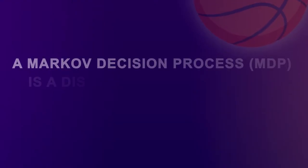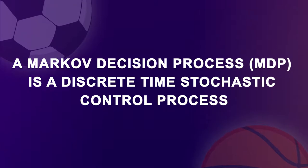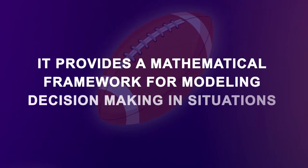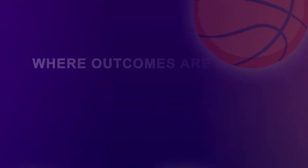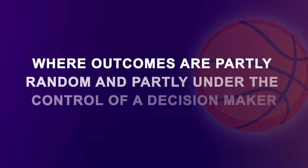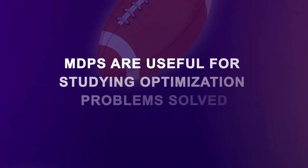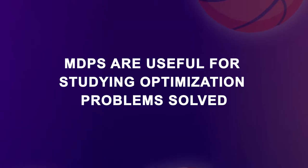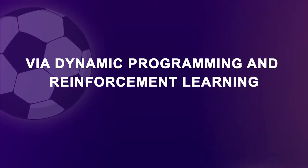A Markov decision process is a discrete-time stochastic control process. It provides a mathematical framework for modeling decision-making in situations where outcomes are partly random and partly under the control of a decision-maker. Markov decision processes are useful for studying optimization problems solved through dynamic programming and reinforcement learning.